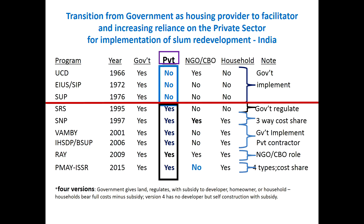The example I'm going to give is from India. What we see on the left, going down the column, are a series of programs — I'm just providing the acronyms — and the year, starting with 1966 and coming up to 2015. Government involvement is all the way down, but its role differing in terms of implementation, with the next column showing no private engagement, and then switching, where government as a housing provider turns into a facilitator and there is increasing reliance on the private sector for implementation. There's a mixed record on civil society engagement over time, and with the private sector, over time there was government engagement, but also a period where developers have been engaging the community-based organizations.